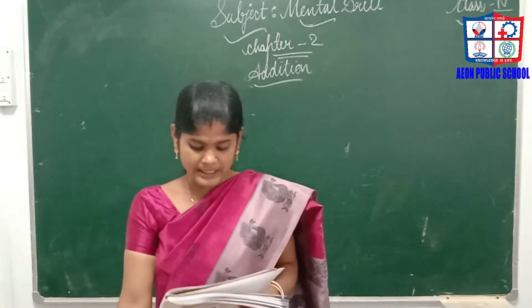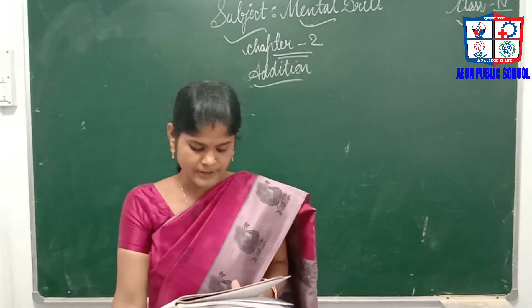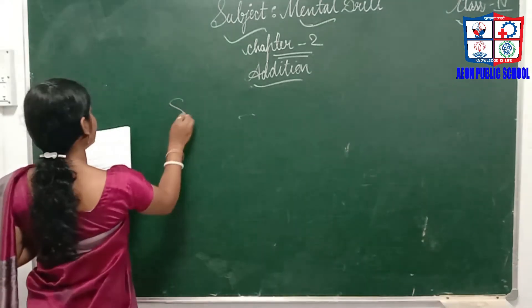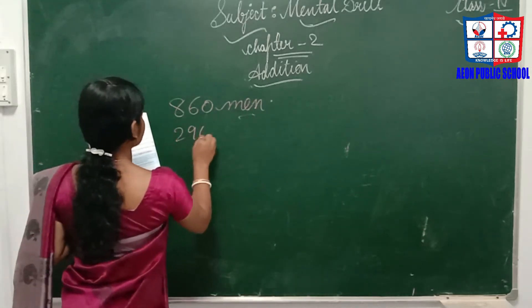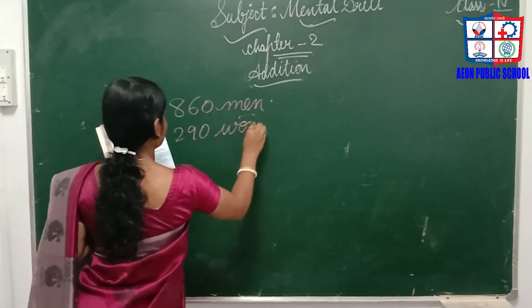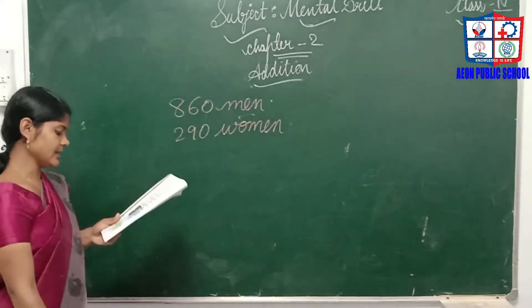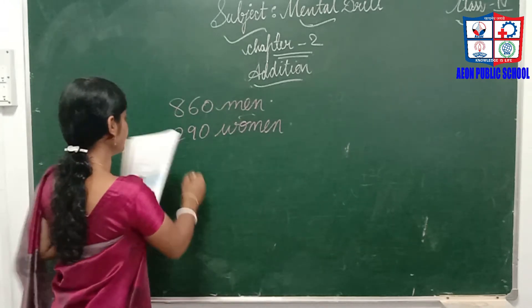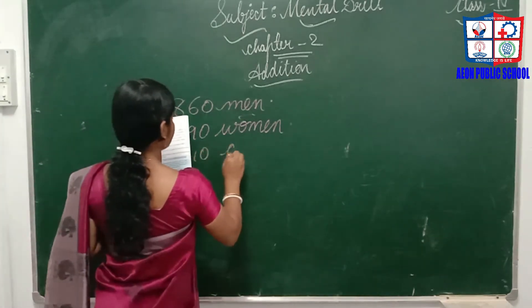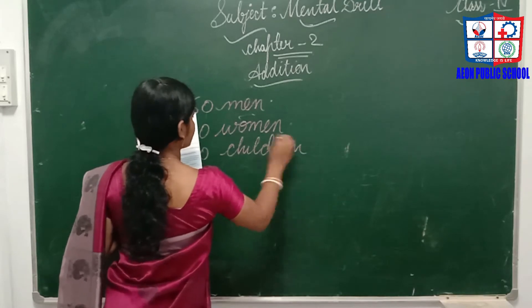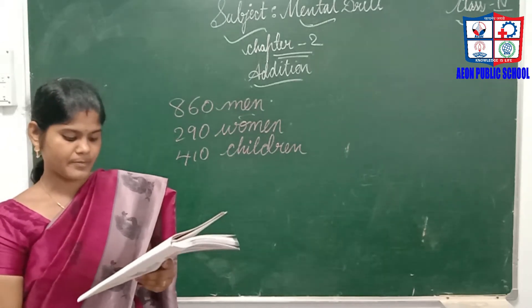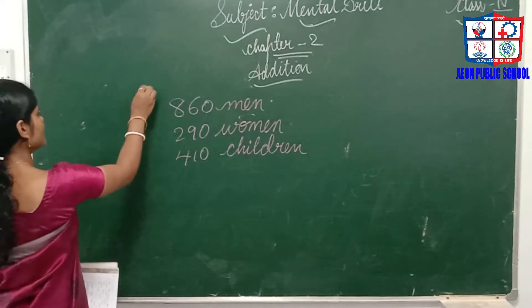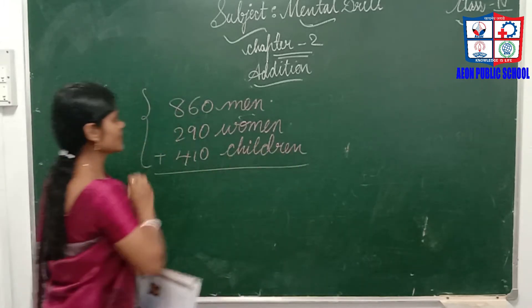Page 14, solve and write the answer. First question: there are 860 men and 290 women and 410 children in a hall. The question asks for the total number of people in the hall, so we have to add all three numbers together.